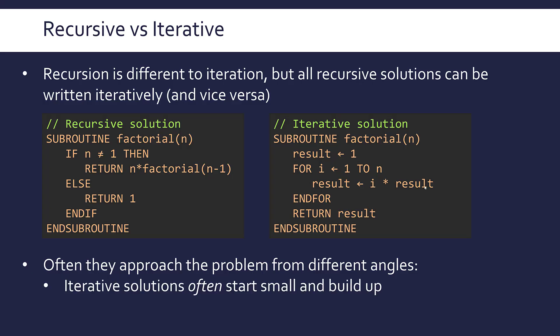A lot of the time — not always, but a lot of the time — iterative solutions will start small and build their way up. So you'll start at the smallest area of your problem and just work your way up until you have your solution — really a bottom-up approach. With factorials, my code here starts with I being one and before the increments it gets bigger and bigger until we reach N, multiplying this cumulative product as we go. It tends to work better with iteration if you start small.